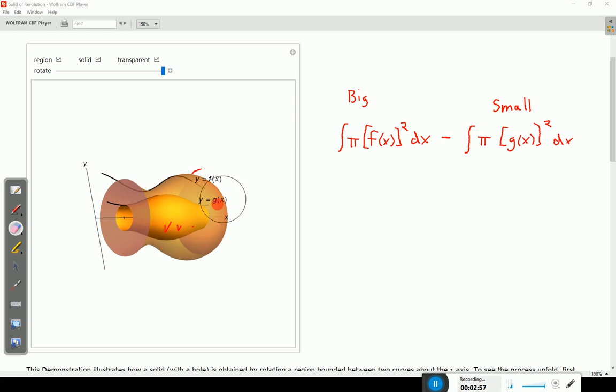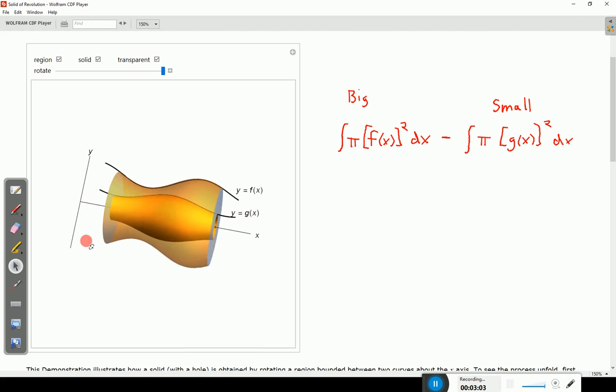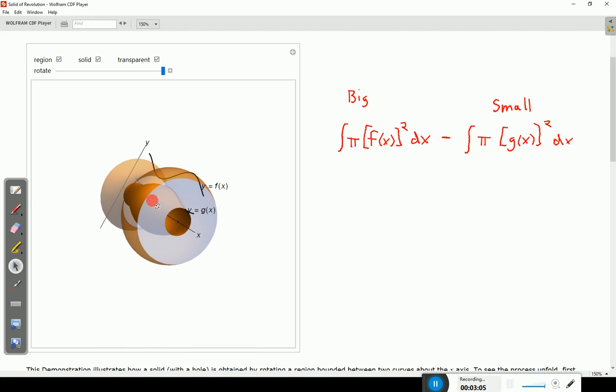And this is the smaller one. So we're finding the volume of the large vase and then subtracting off the inside part to make it hollow. And the reason why this is sometimes called the washer method is because you can see the cross-section looks like a washer. Personally I prefer the donut method.